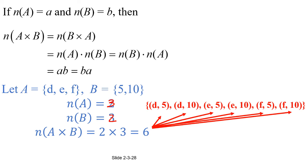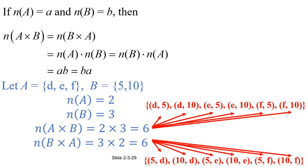Now what if we turn it around and find B cross A? We're going to have the same six pairs, but in a different order. So instead of (D, 5), for example, we have (5, D) — but there are still six of them. The order in which we write the Cartesian product changes the way the elements look, but it doesn't change the number of elements. It's still going to be the same.